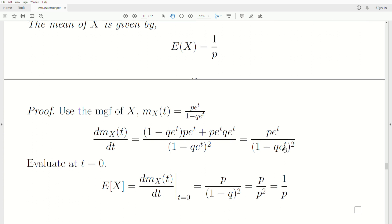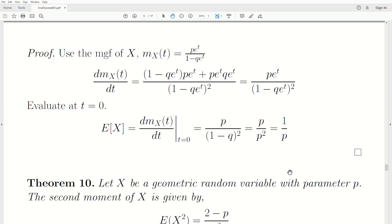Now to find the first moment, we took the first derivative. Now we have to set T equal to zero. And so when you plug in E to the zero, you get one. And so it reduces to P over one minus Q squared. But one minus Q is just P. So we get P squared. And then one of those cancel and we're left with one over P. And that's what we said it was going to be.